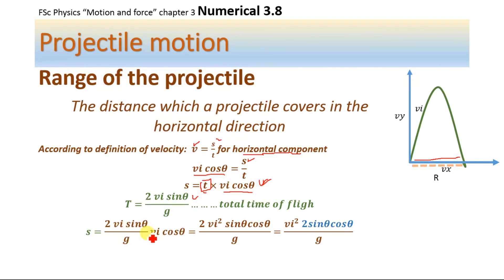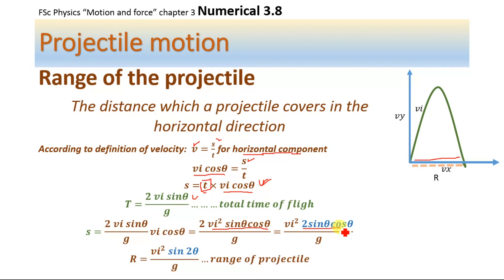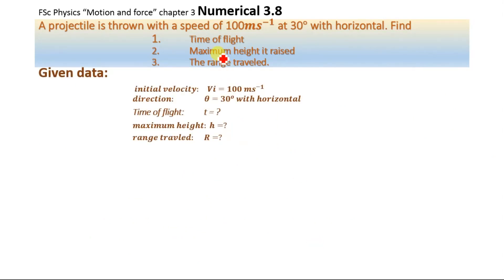This VI multiplied by VI gives VI², so we have 2·VI²·sinθ·cosθ / g. Rearranging, we have VI² × 2sinθcosθ / g. Using the trigonometric identity 2sinθcosθ = sin2θ, the range of the projectile is R = VI²·sin2θ / g. We will use this equation to determine the range of the projectile.